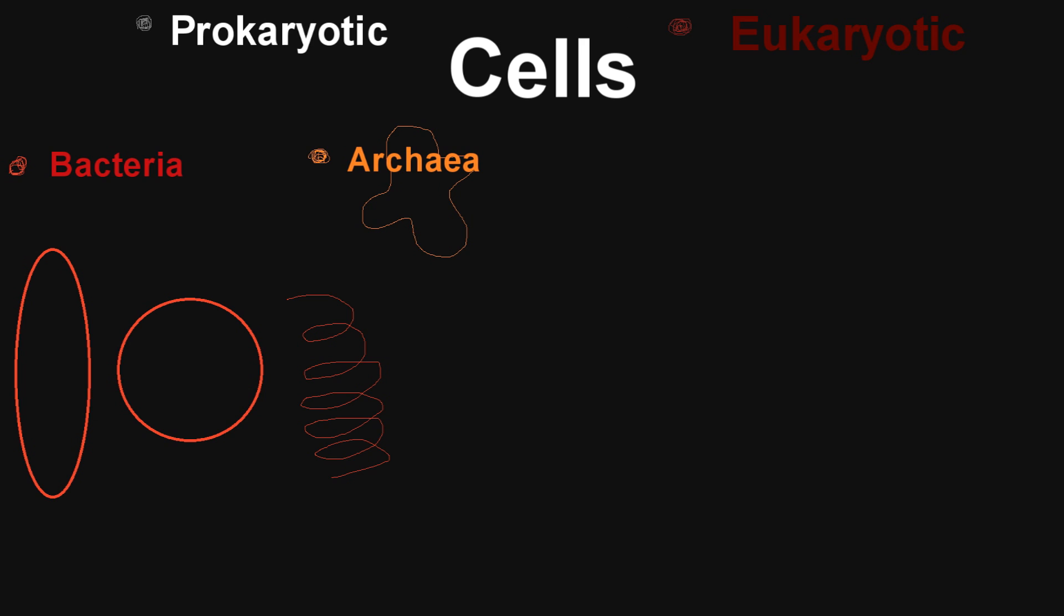Moving on to the eukaryotes now. There are three main types. There are the plants, which are usually rectangular or square. Then there are animal cells, which are usually spherical in shape. But again, they can be any shape - these are probably the weirdest out of all of them because they can be more than a foot long in the case of neurons. We're going to draw them as spherical animal cells.